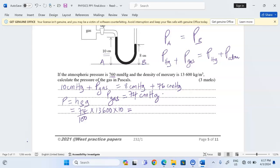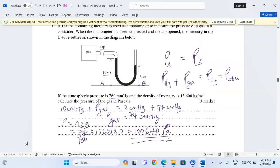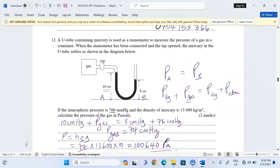We multiply all this, going to take 74 over 100 multiplied by 13,600 multiplied by 10, and this is going to give us exactly 100,640 Pascals. So this will be the amount of pressure of the gas in the above manometer.